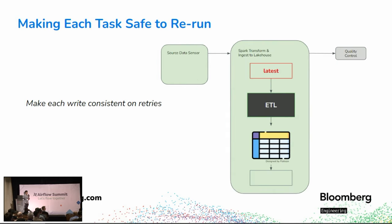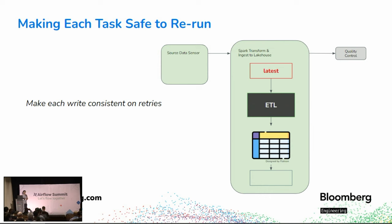A common mistake when ingesting time series or date-partitioned data into a lakehouse is querying for the latest data when fetching. This becomes a problem especially if your task doesn't succeed when it's supposed to. For example, a task supposed to succeed today to fetch today's data might instead succeed tomorrow because of a day-long Airflow cluster outage — and then what data do we ingest on the 19th versus the 20th?